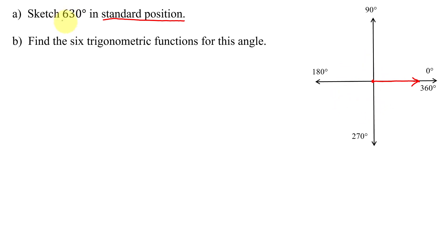But my angle of 630 degrees is bigger than one rotation of 360 degrees. So I'm going to use coterminal angles to figure out where the terminal side lies. Coterminal angles differ by one revolution, or in this case, since I'm in degrees, 360 degrees.